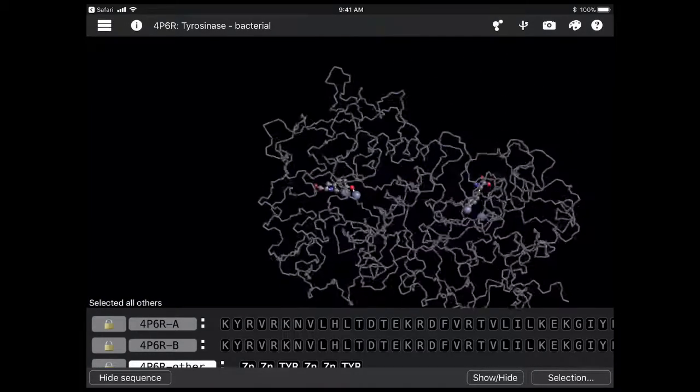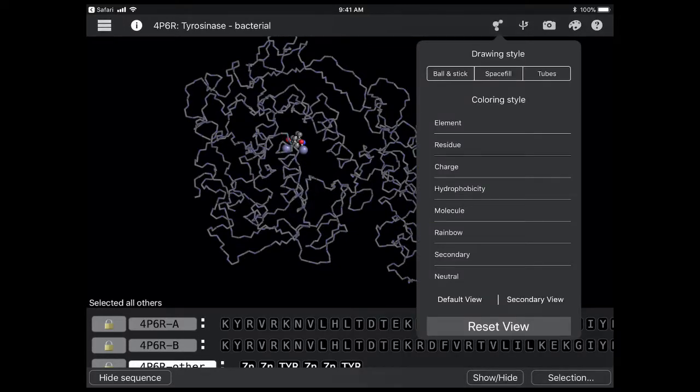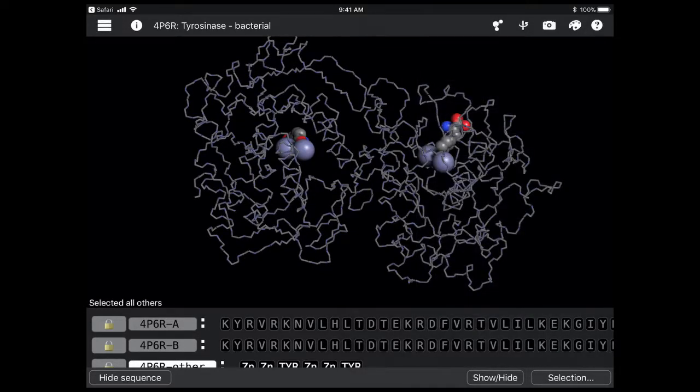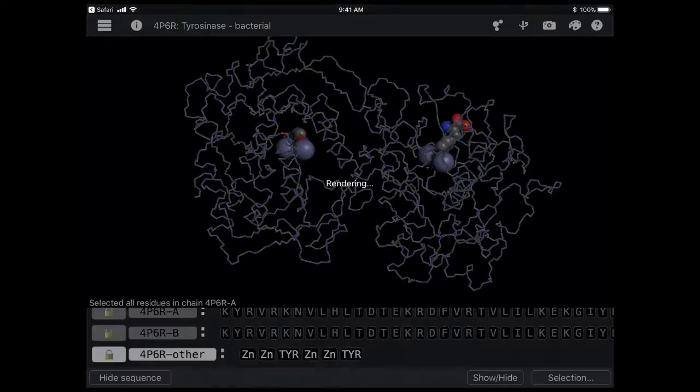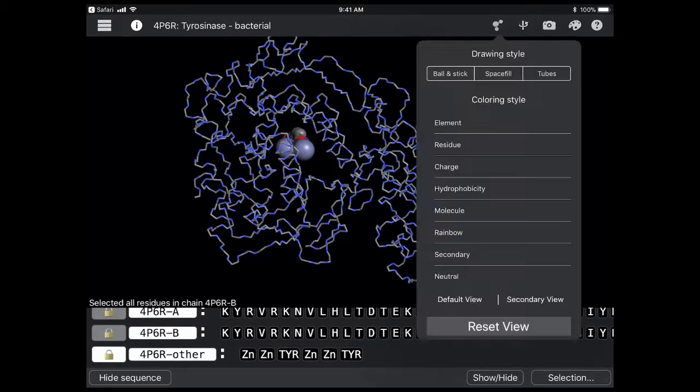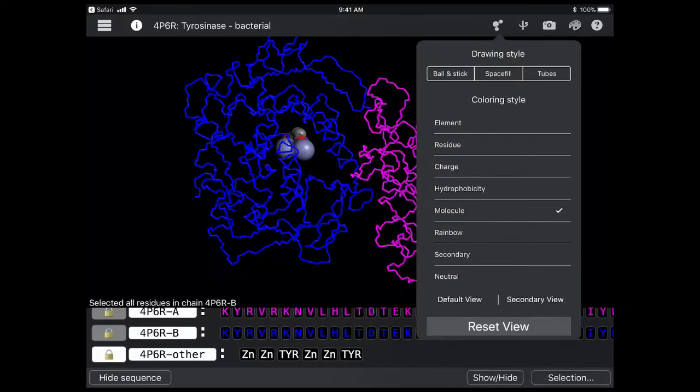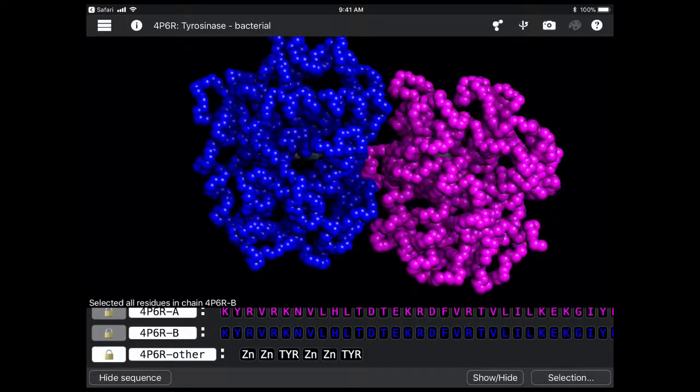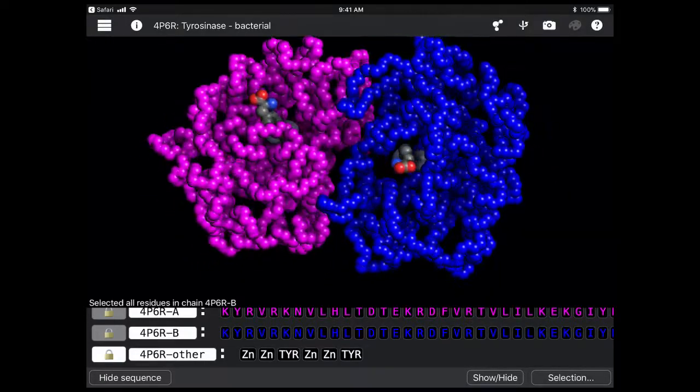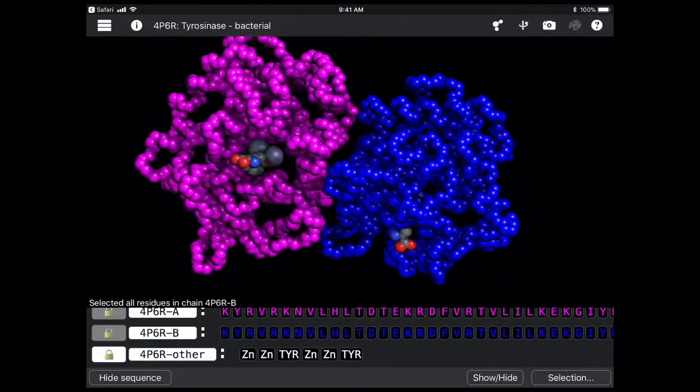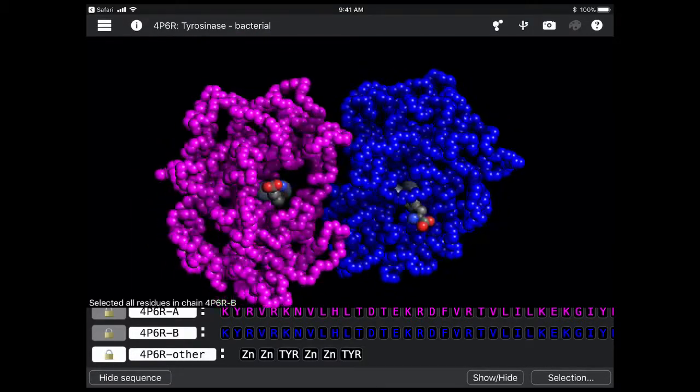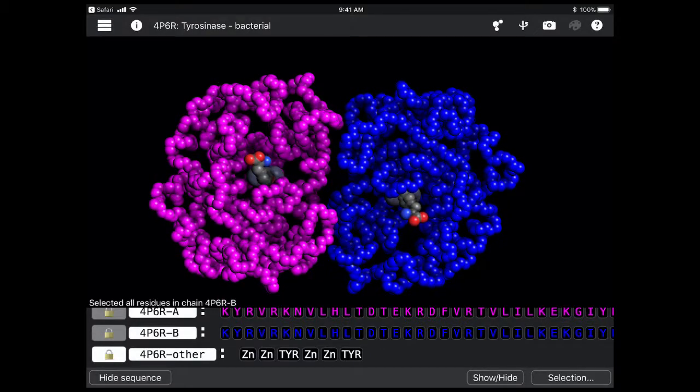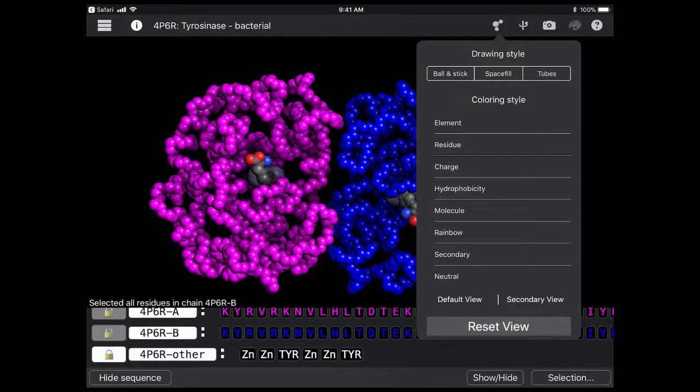Now I'm going to change the drawing style to Space Fill. So I can highlight these chemicals and I'm going to set the lock so they won't change. And it'll be easier to see them later on. Now if I change the drawing style and coloring style to Molecule and Space Fill, I can see the two subunits of the tyrosinase enzyme. And I can see where the zinc and the substrate, the tyrosine substrate, are sitting in the protein. I can also see the region where the two subunits are interacting.